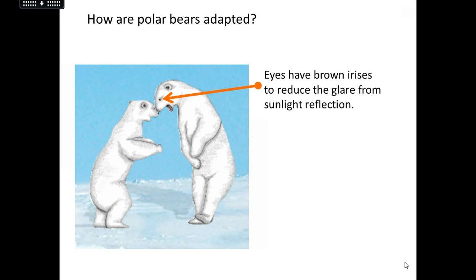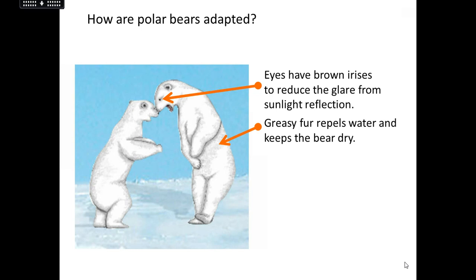They also have brown irises — the coloured part of the eye. This helps with the sunlight reflected off the snow. Not only do they have to deal with bright sunlight in the Arctic, but it's also reflected off the snow, so it's very glaring. These brown irises help the polar bear see really clearly. They also have grease over their fur. Because oil and water repel each other, when they come out of the water, the water literally drips off. If water stayed on their fur it would freeze and keep the bear really cold, so this greasy fur repels water and keeps the bear nice and dry.